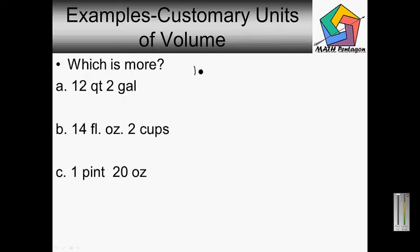First I'm going to convert 12 quarts. I know that 4 quarts is equal to 1 gallon. What I would do is take 12 quarts divided by 4 quarts to figure out how many gallons this is. So 12 quarts divided by 4 quarts is going to give me 3 gallons.